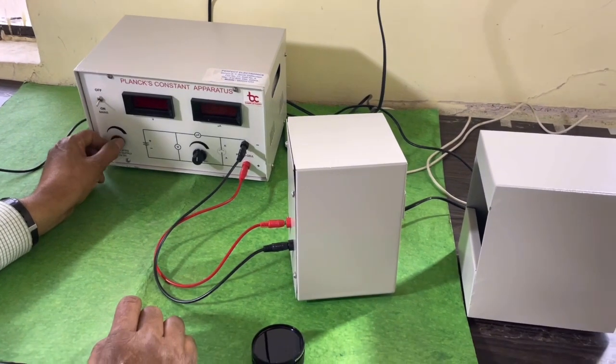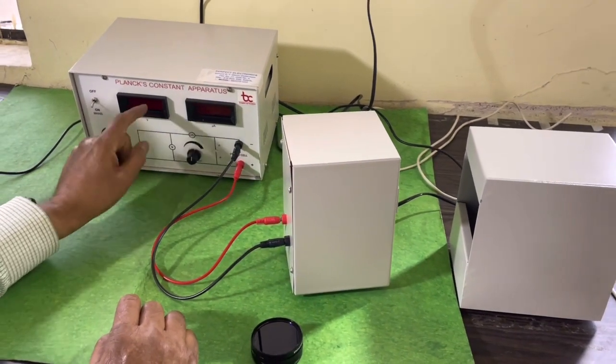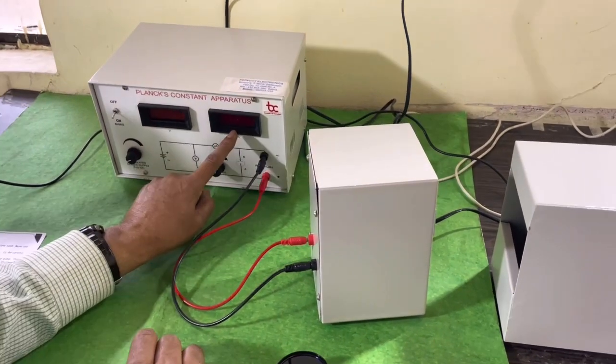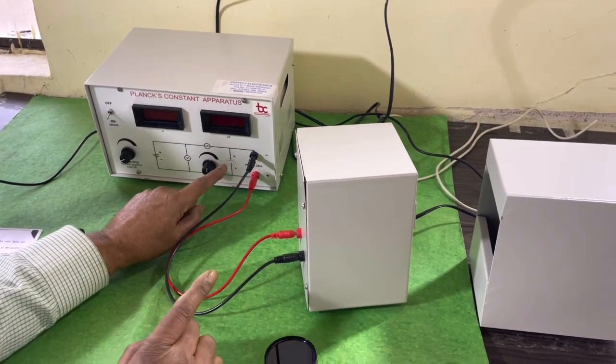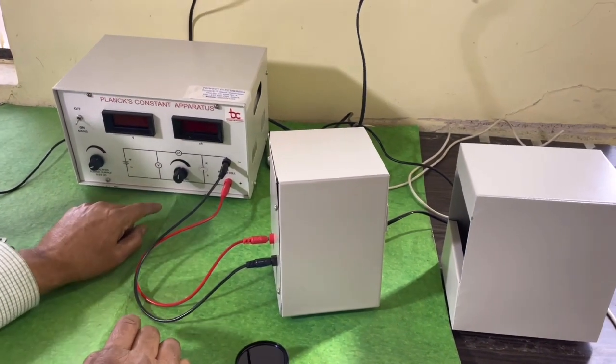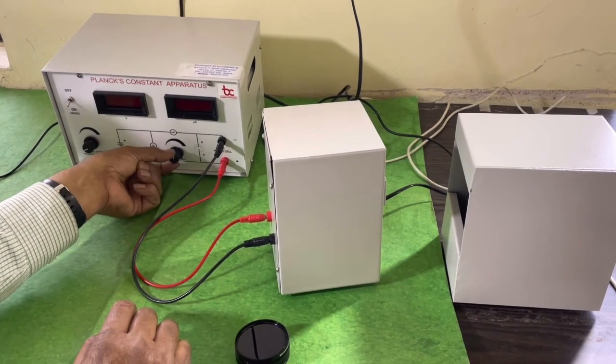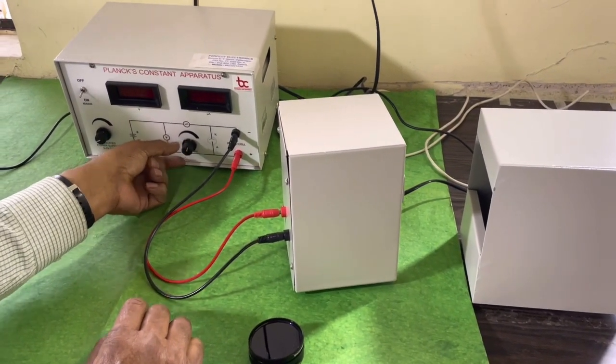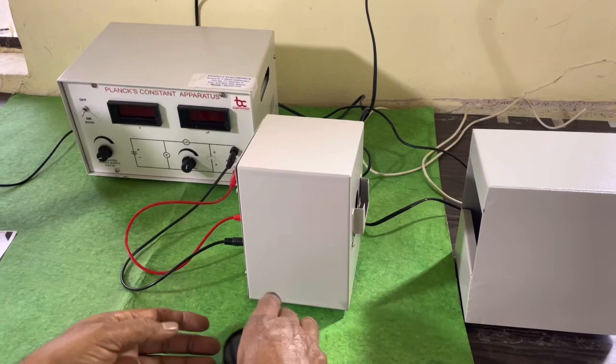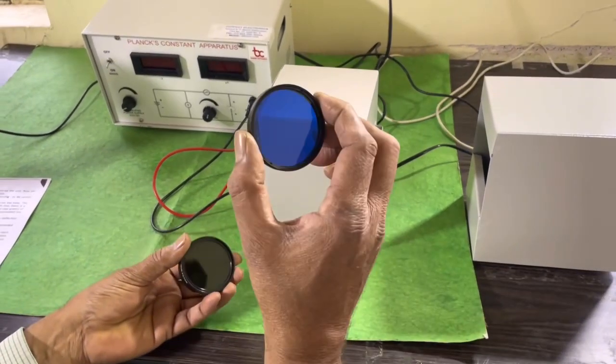Zero to two volts voltage is measured from the voltmeter. This is a microammeter where the photocell current is measured by this meter. This is the sensitivity control.